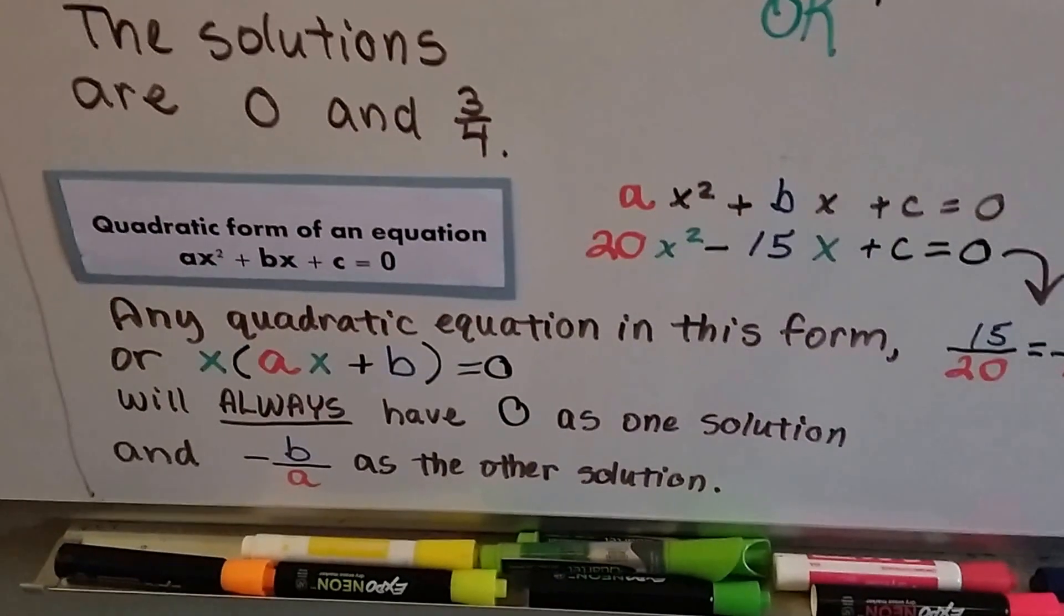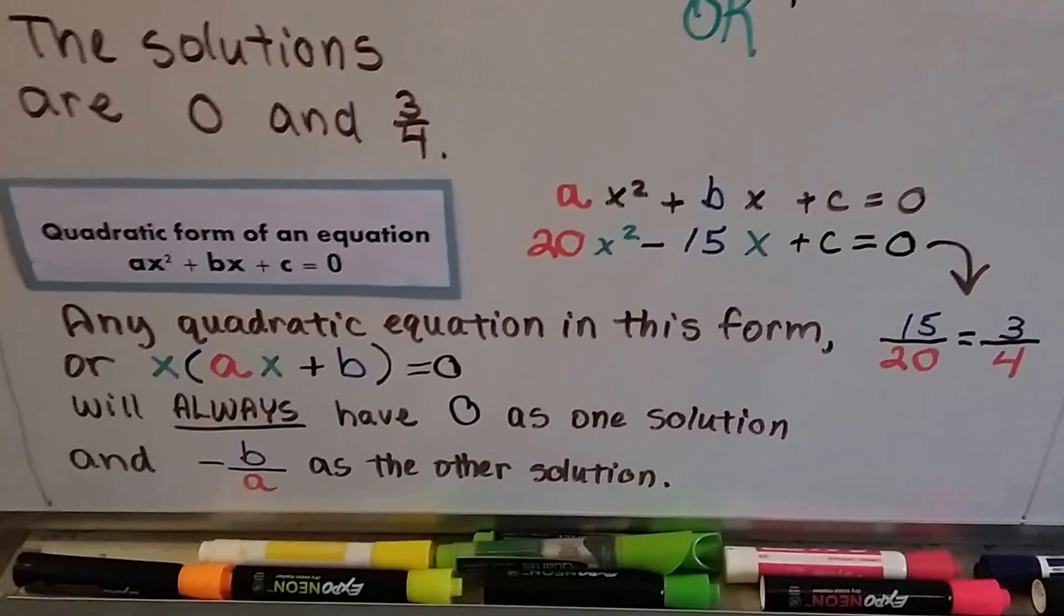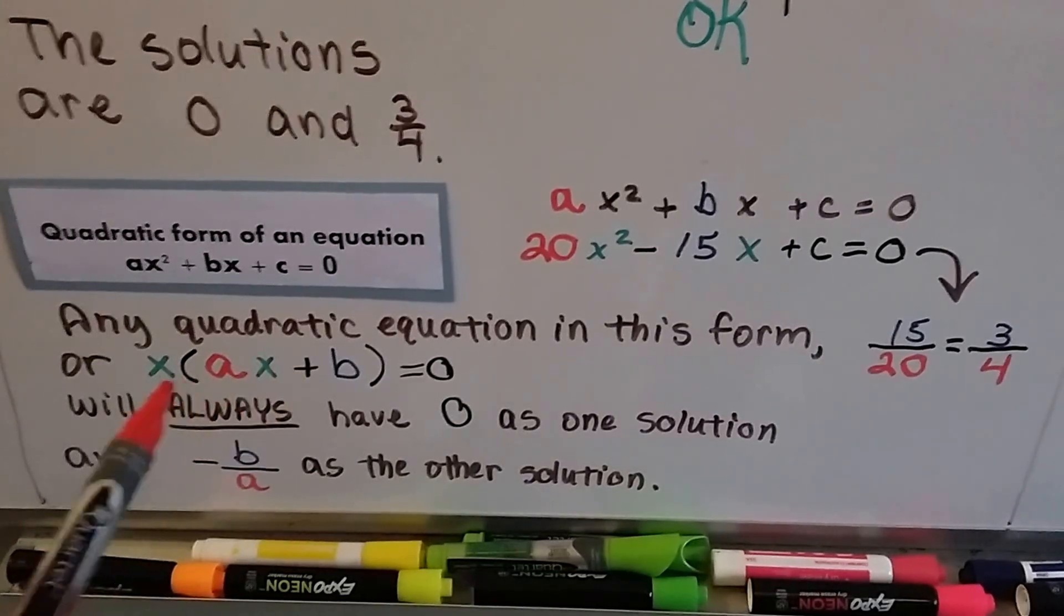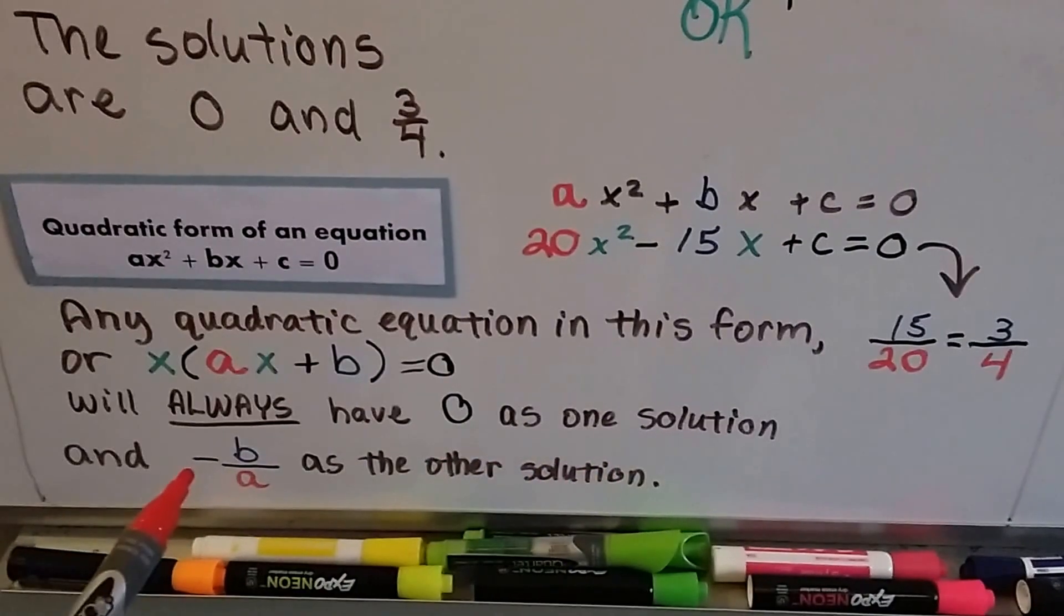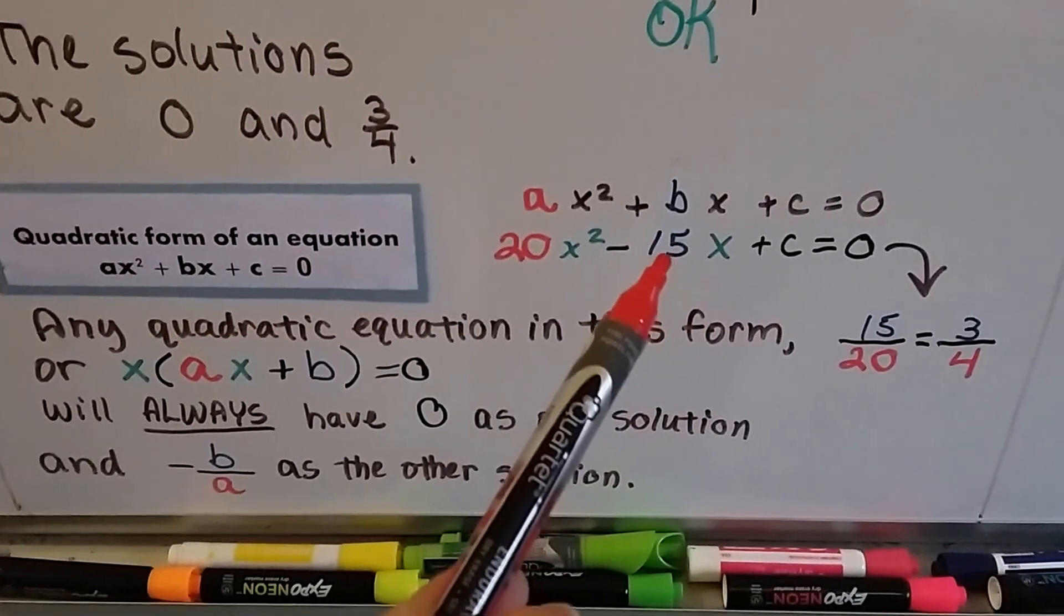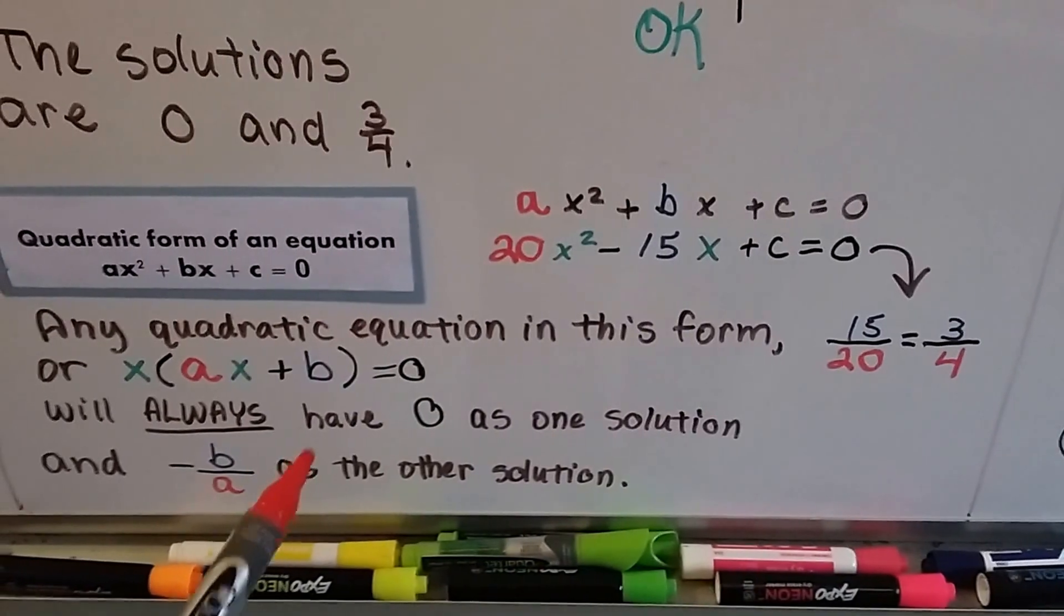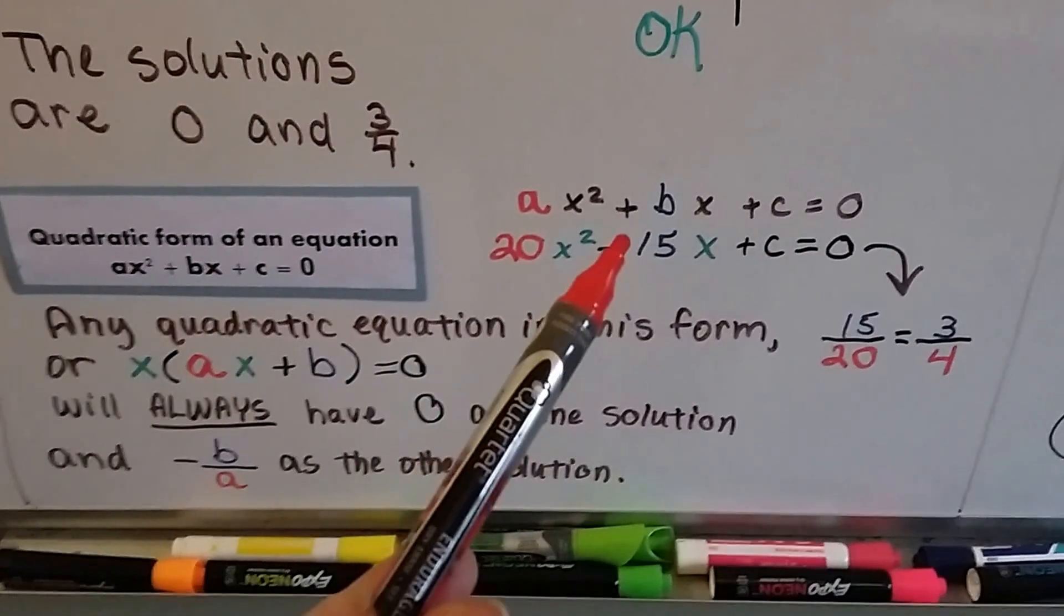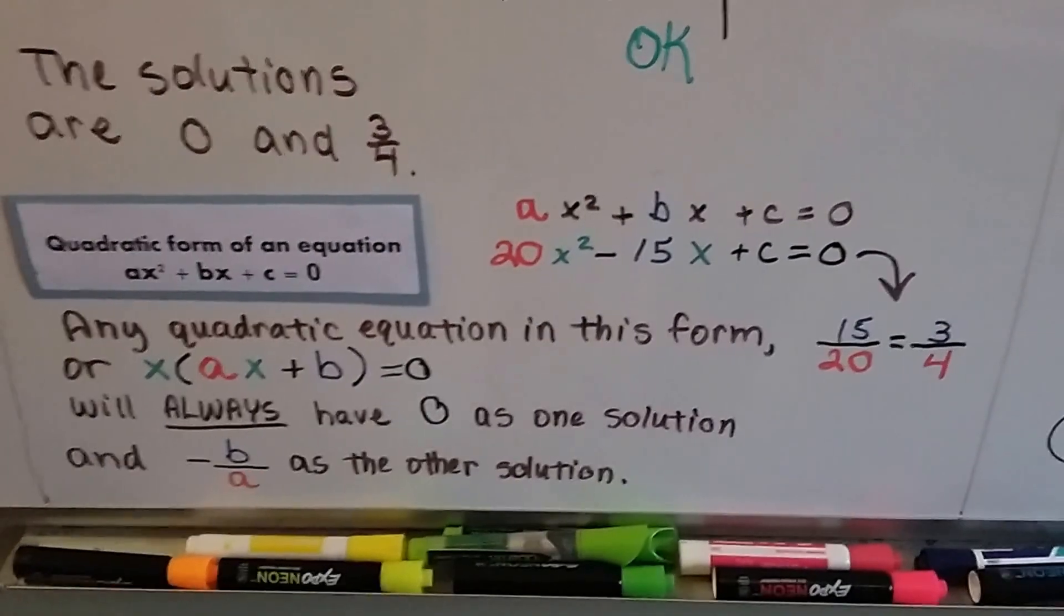For the quadratic form of an equation, any quadratic equation in this form, or in this form where it's factored, it's always going to have zero as one solution and negative b over a as the other solution. Look it. 15 over 20 is 3 fourths. So they're saying if this is a positive, then you're going to have that negative b over a. Because we started with a negative, we ended up with a positive. But it's still going to be b over a.